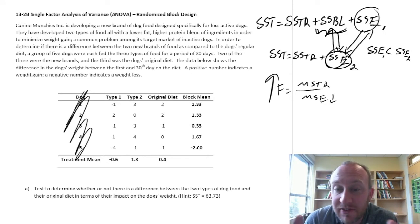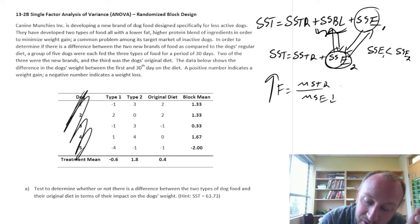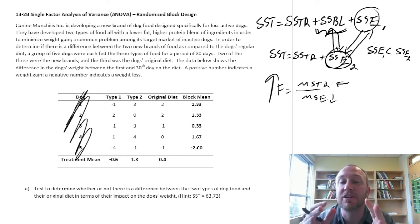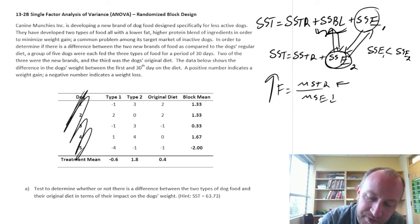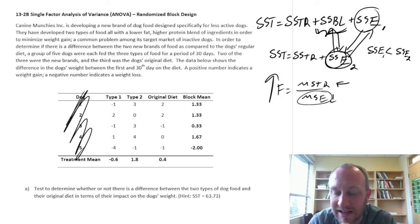So with a larger F-statistic, that now makes it more easy to identify any difference which can be attributed to differences between treatments. So that's why it's beneficial if we can set up an experiment as a randomized block design because it gives us a more refined, more robust estimate of MSE by taking into account this other source of variation.